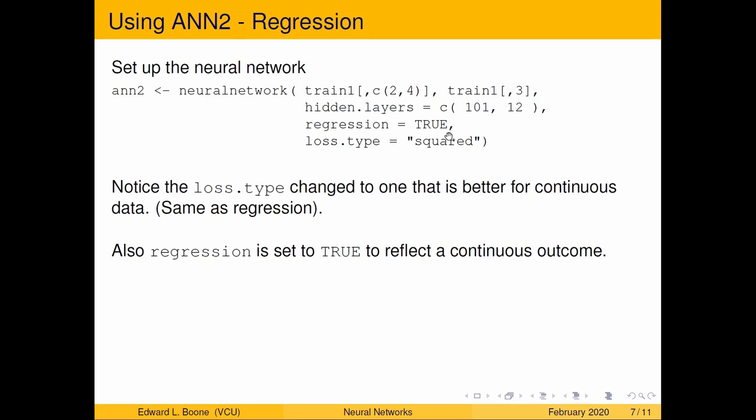Here it says regression equals true. So this means that we have a continuous outcome. And then here the loss type is squared and this is the same as for regular regression. Usually you're fitting a least squares line. The squared is the same sort of error that it's measuring. There are lots of other errors associated with or loss types associated with ANN2 and you can look those up. I'm trying to keep with the most familiar ones to get you going. All right so let's give this a go.